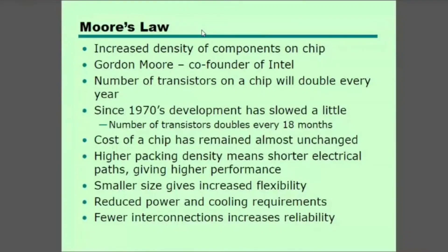Therefore, the microchip follows this doubling pattern. We can see the memory and processor evolving: from 128 KB RAM to increasingly larger RAM capacities available in modern systems.